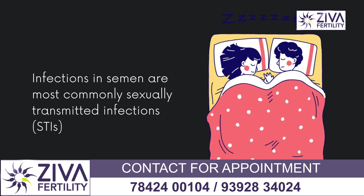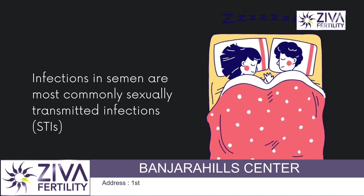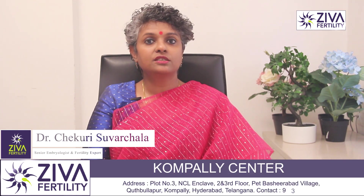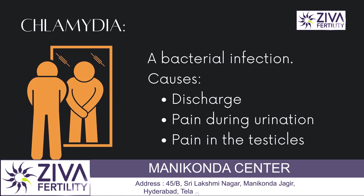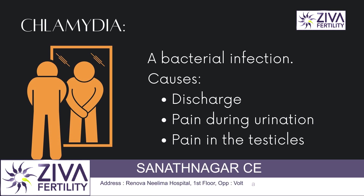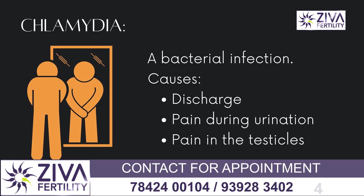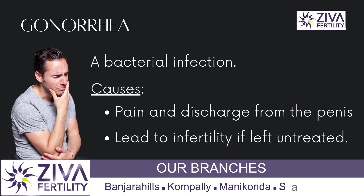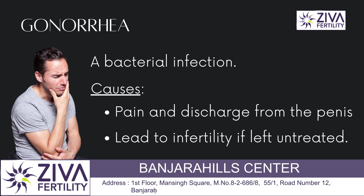Infections in semen are known as sexually transmitted infections and they can spread through sexual contact. Some common sexually transmitted infections that can be present in semen include Chlamydia, a bacterial infection that can cause discharge, pain during urination and pain in the testicles. Then there is Gonorrhea, a bacterial infection that can cause pain and discharge and can lead to infertility if left untreated.